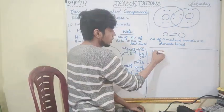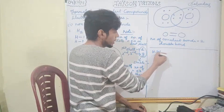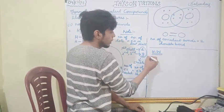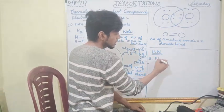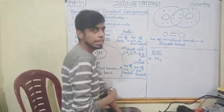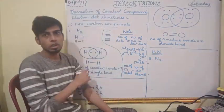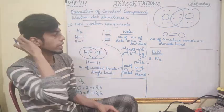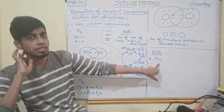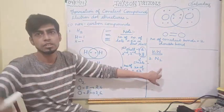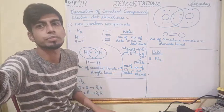For homework, try drawing the electron dot structure for the nitrogen molecule N2. This will be discussed in the next class. Bye.